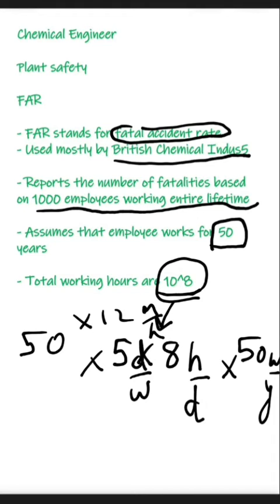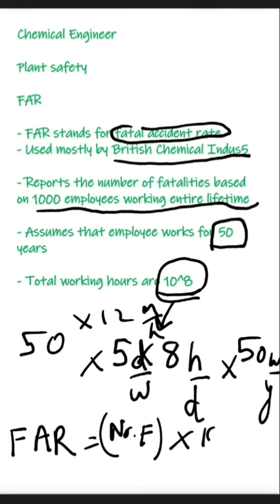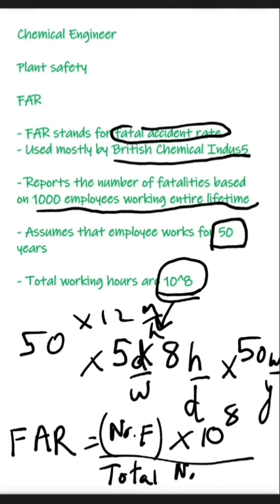The formula is the same as what we discussed in OSHA. FAR equals the number of fatalities multiplied by 10 raised to 8, divided by the total number of employees taken into the study. This is how we calculate the FAR, that is the Fatal Accident Rate.